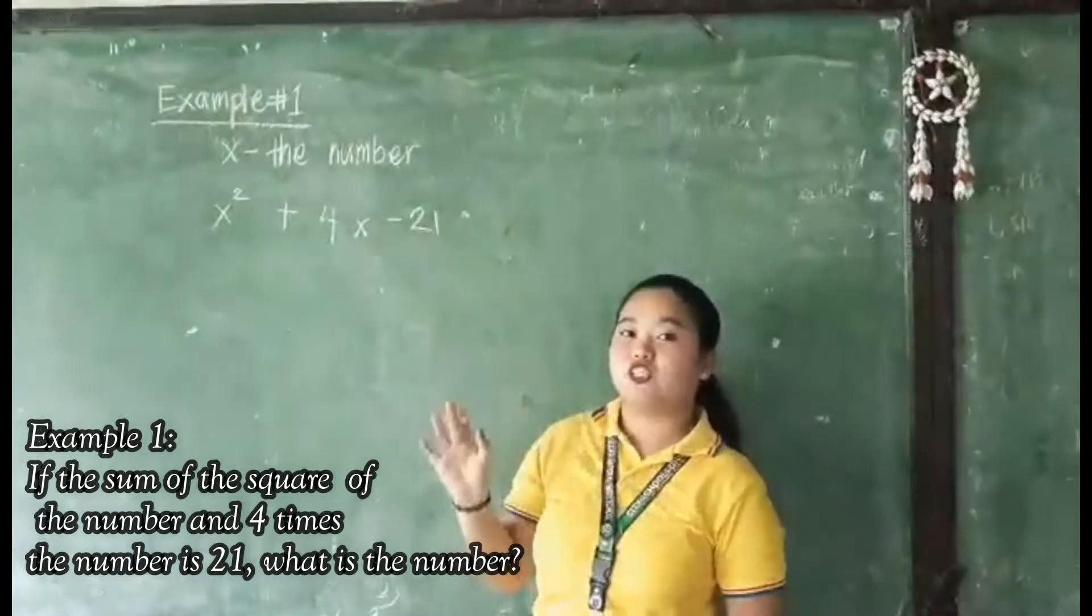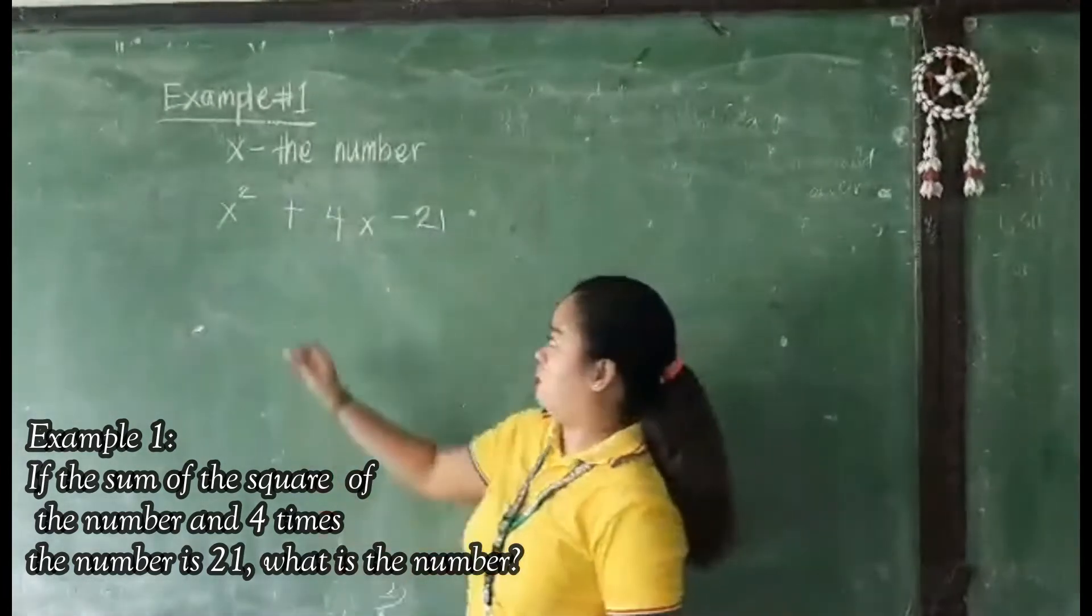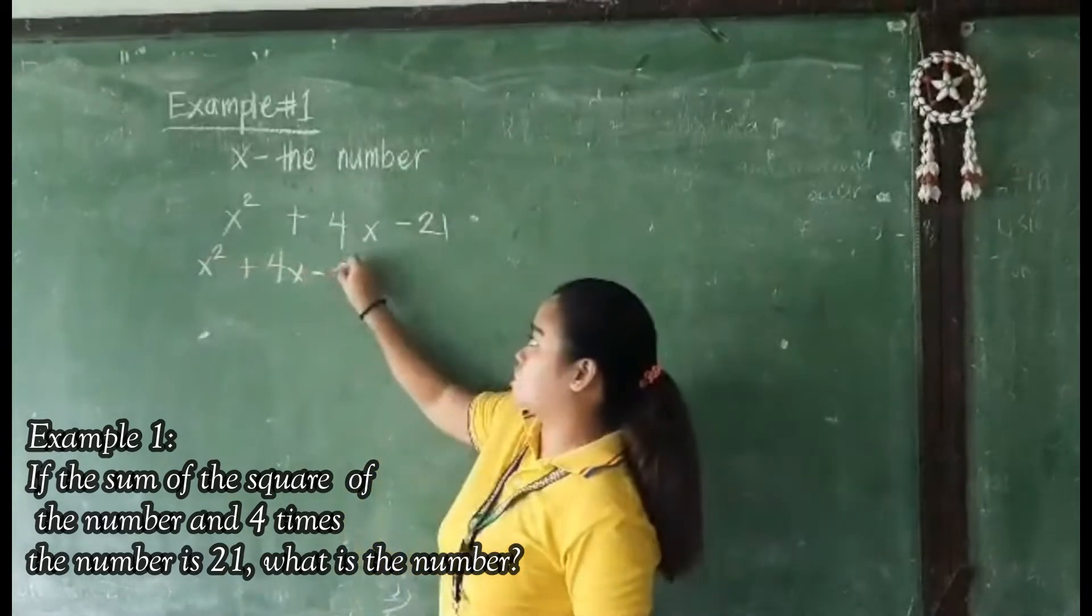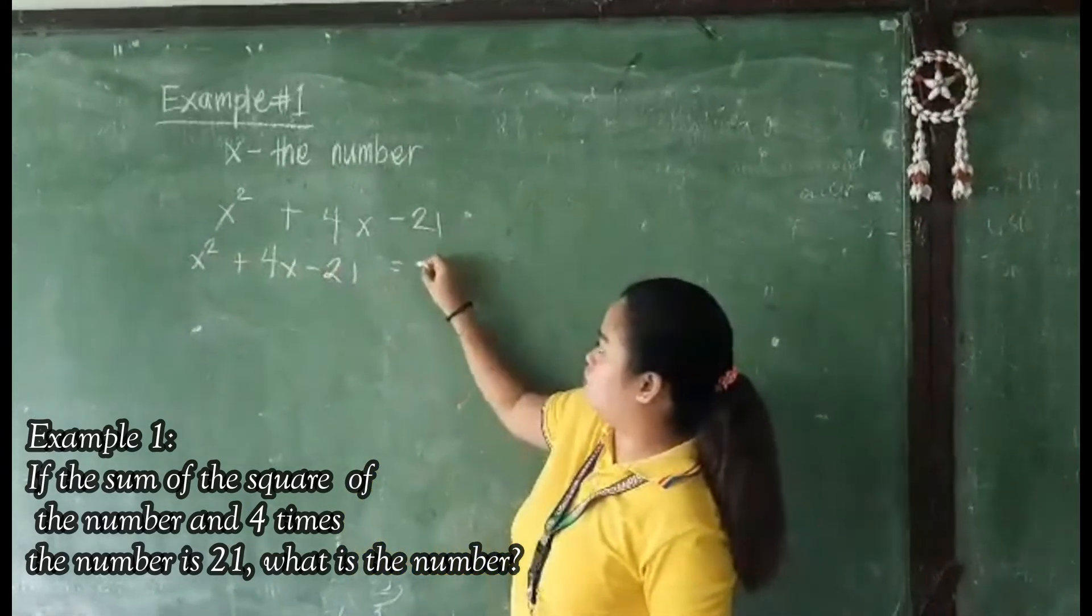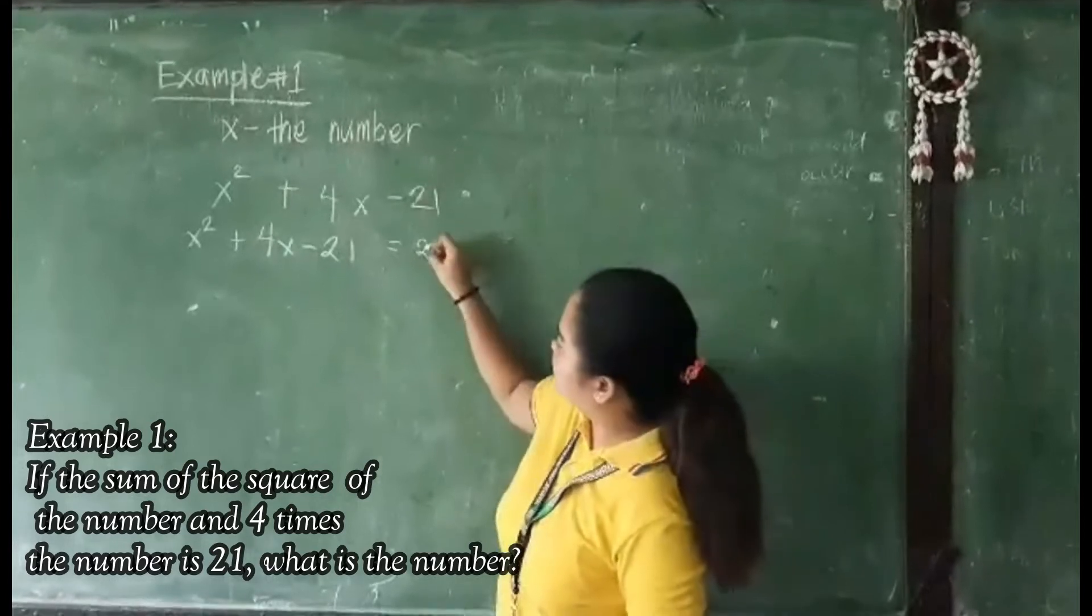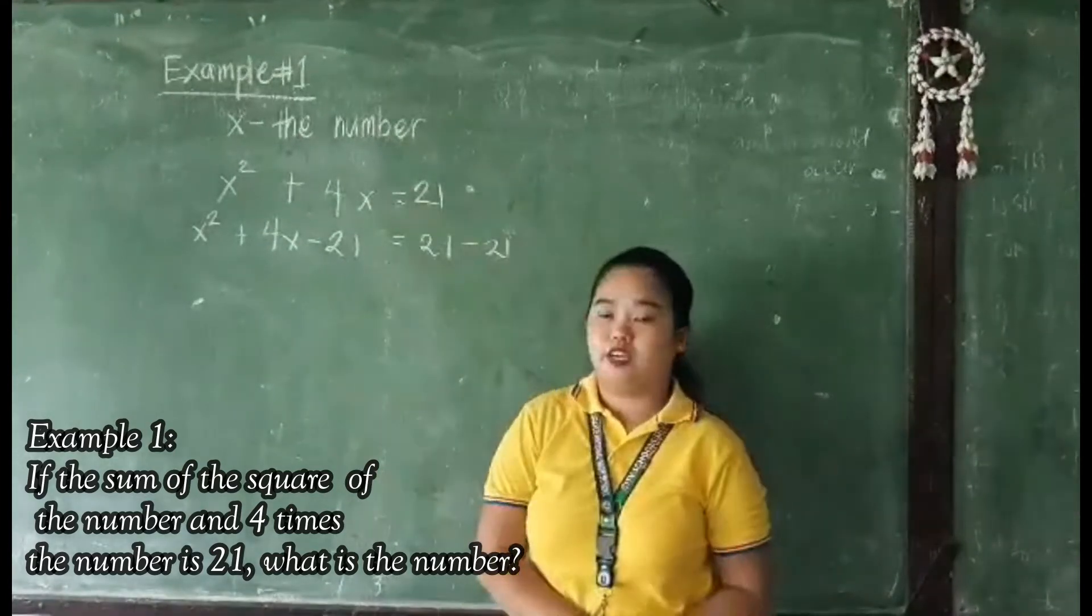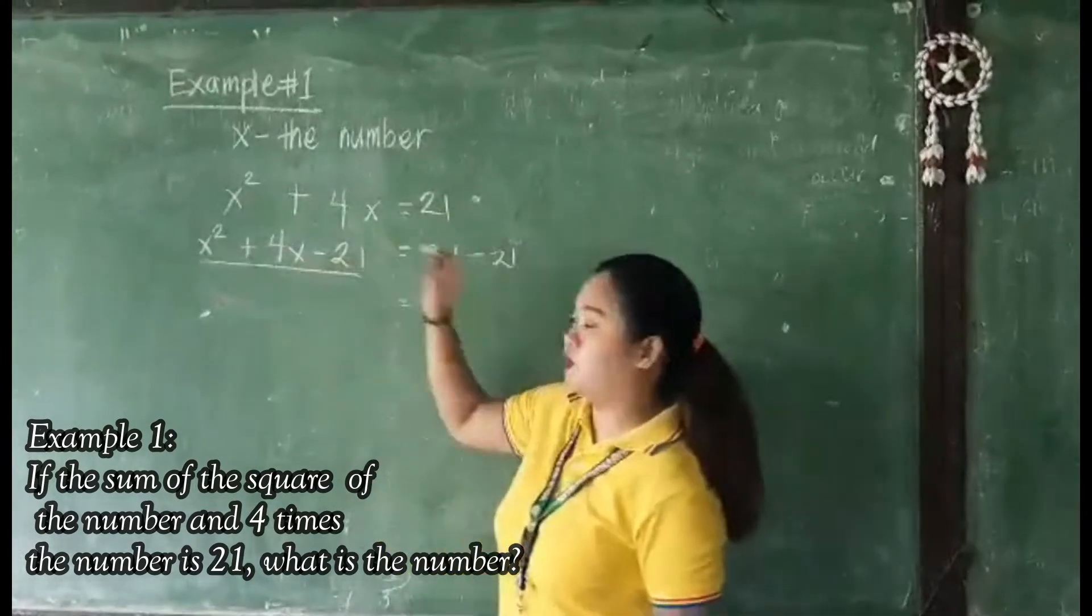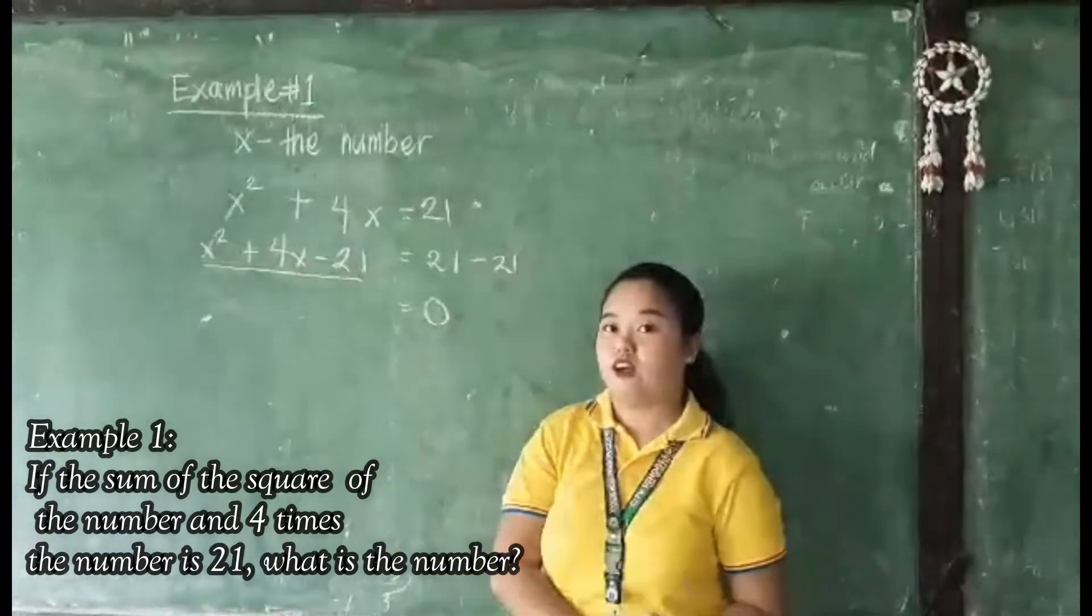So we need to apply addition property of equality. So x squared plus 4x minus 21 is equal to 21 minus 21. Okay, so it will be 0. So this will be our polynomial that we need to factor.